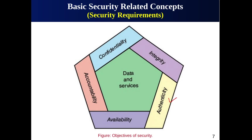Information is authentic when it is in the same state in which it was created, placed, stored, or transmitted. Then we have accountability — systems must keep records of their activities for forensic analysis or to track security breaches. It should be possible to trace actions of an entity uniquely to that entity. A log file must be created recording the transaction performed, the time of the transaction, the IP address, location, user ID who performed it, and similar information for accountability purposes.